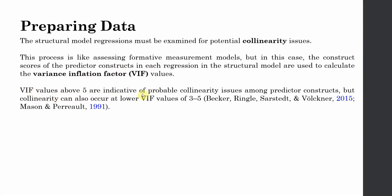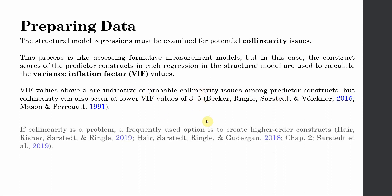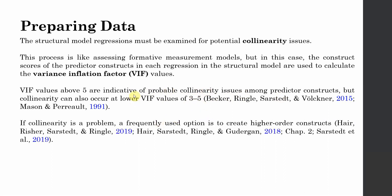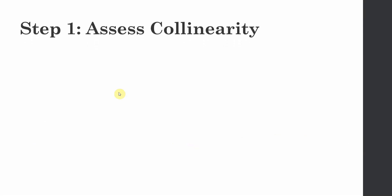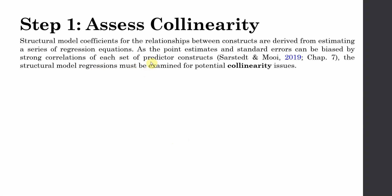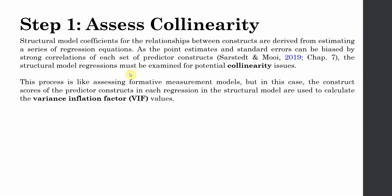VIF values above 5 are indicative of probable collinearity issues that need to be resolved. Normally the preferred value is below 3, but anything less than 5 is acceptable. If collinearity is a problem, a frequently used option is to create higher order constructs. Now let's assess collinearity in SmartPLS by developing a very basic model and running the collinearity diagnostics.